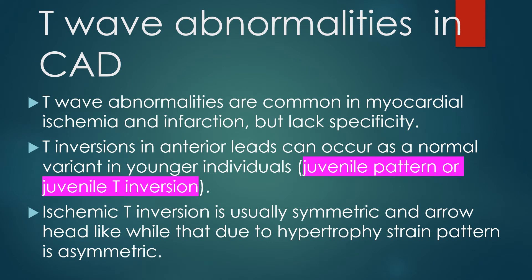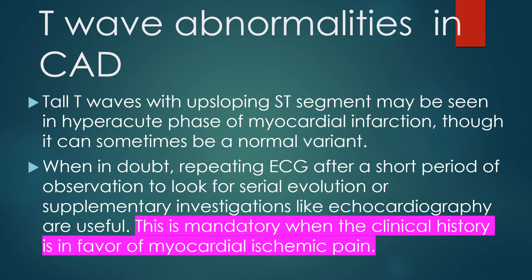T wave abnormalities are common in myocardial ischemia and infarction but lack specificity. T inversions in anterior leads can occur as a normal variant in younger individuals, known as juvenile pattern or juvenile T inversion. Ischemic T inversion is usually symmetric and arrowhead-shaped, while those due to hypertrophy strain are asymmetric. Tall T waves with upsloping ST segment may be seen in the hyperacute phase of myocardial infarction. When in doubt, repeating the ECG after a short observation period or supplementary investigations like echocardiography are useful, especially when clinical history favors myocardial ischemic pain.